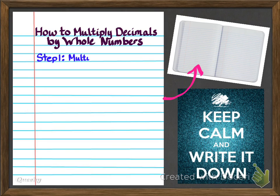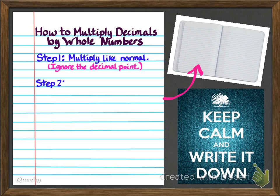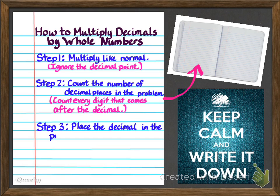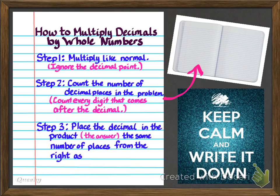Step one: when multiplying decimals by whole numbers, we're going to multiply like normal — basically pretend that the decimal point is not there. Step two: once we've multiplied, we're going to count the number of decimal places in the problem, meaning every digit that comes after the decimal. Step three: we're going to place the decimal in the product — the same number of places from the right as in the factors.